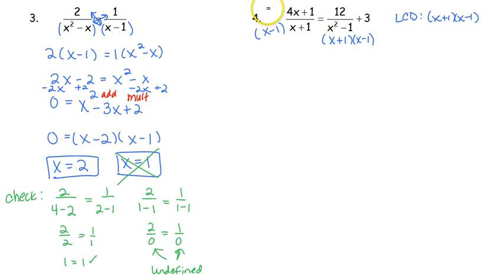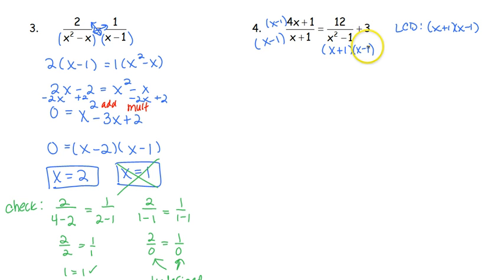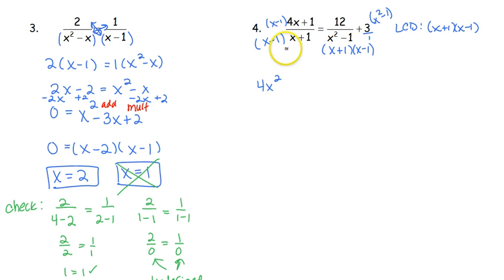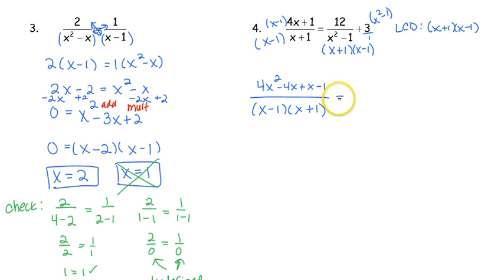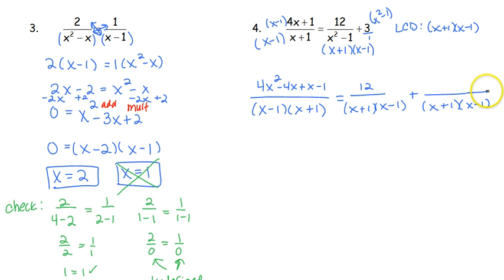The first piece is missing x minus 1. The second piece isn't missing anything, and the third piece is missing everything. Since the third piece is missing everything, instead of multiplying by x plus 1 and x minus 1 separately, we FOIL that out and multiply by x squared minus 1 — it makes the multiplication easier. For the first piece, FOILing the two binomials gives us 4x squared minus 4x plus x minus 1, all over x minus 1 times x plus 1.